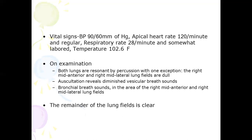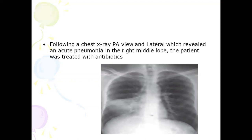On auscultation, the patient has diminished vesicular breath sounds with presence of bronchial breath sounds in the same area — the right mid-anterior and right mid-lateral lung fields — and the rest of the lung fields are clear. You then order a chest radiogram, and on chest X-ray you find a homogeneous opacity in the right middle lobe.